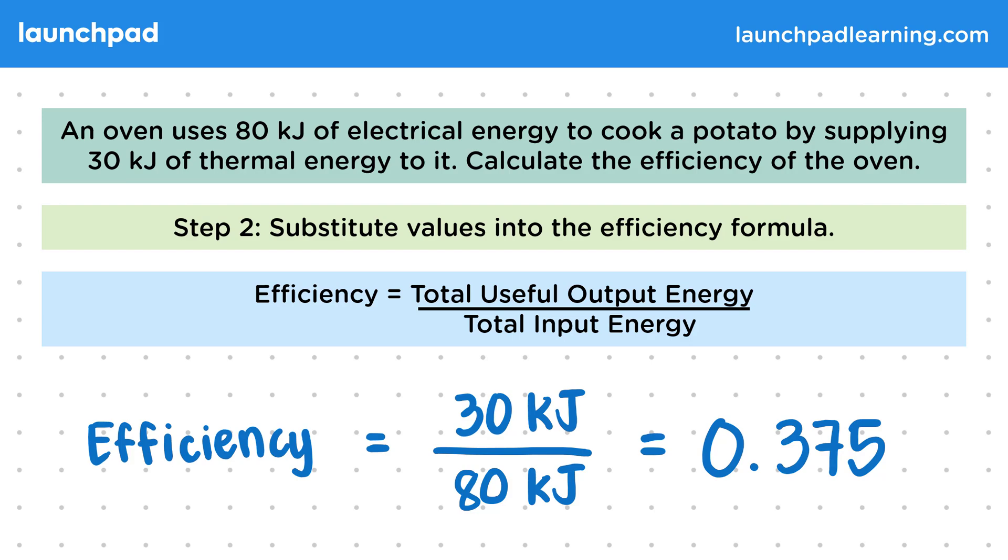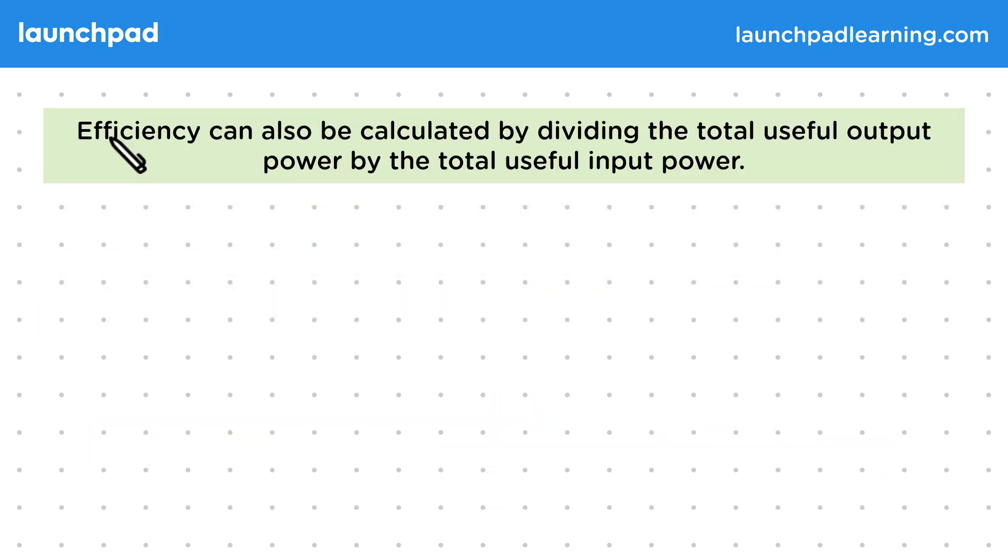Can we also calculate efficiencies using the power of a process? Efficiency can also be calculated by dividing the total useful output power by the total useful input power. In most continuous processes, the rate that useful and wasted energy is output won't change, so we can describe this in terms of their powers.